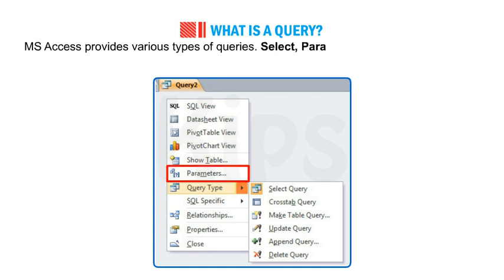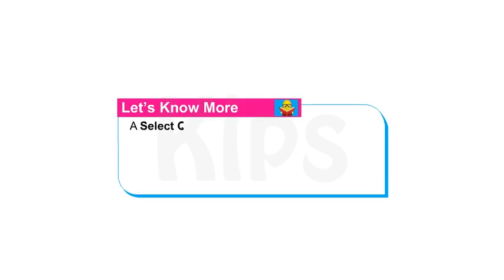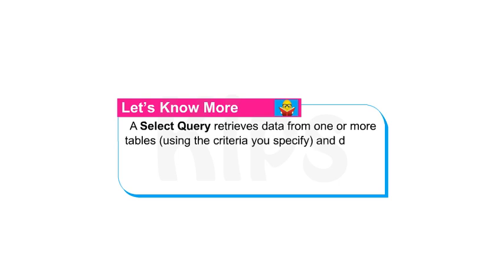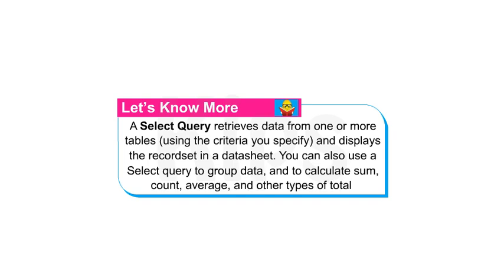The types of queries include Select, Parameter, Crosstab, Action, and SQL (Structured Query Language) Query. A select query retrieves data from one or more tables using the criteria you specify and displays the records in a datasheet. You can also use a select query to group data and to calculate sum, count, average and other types of totals.